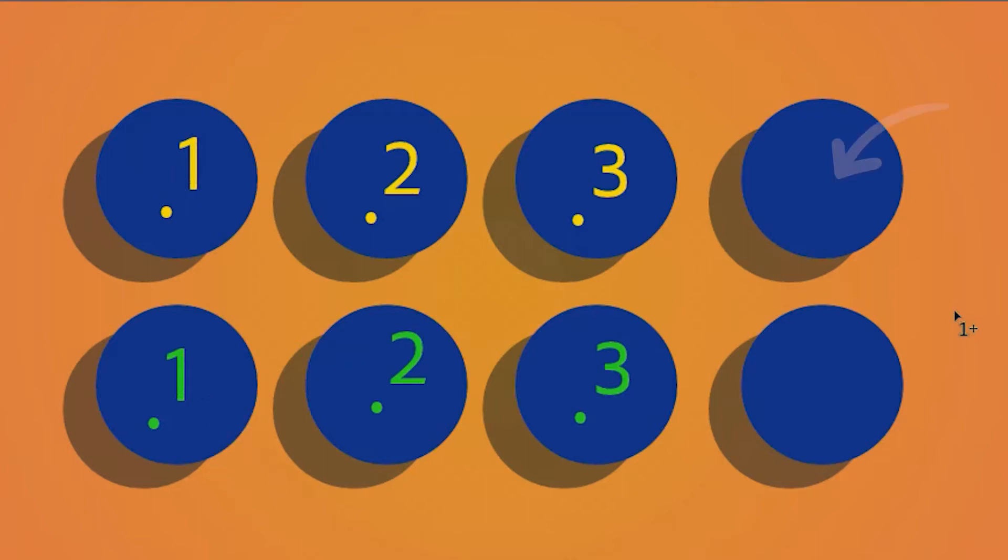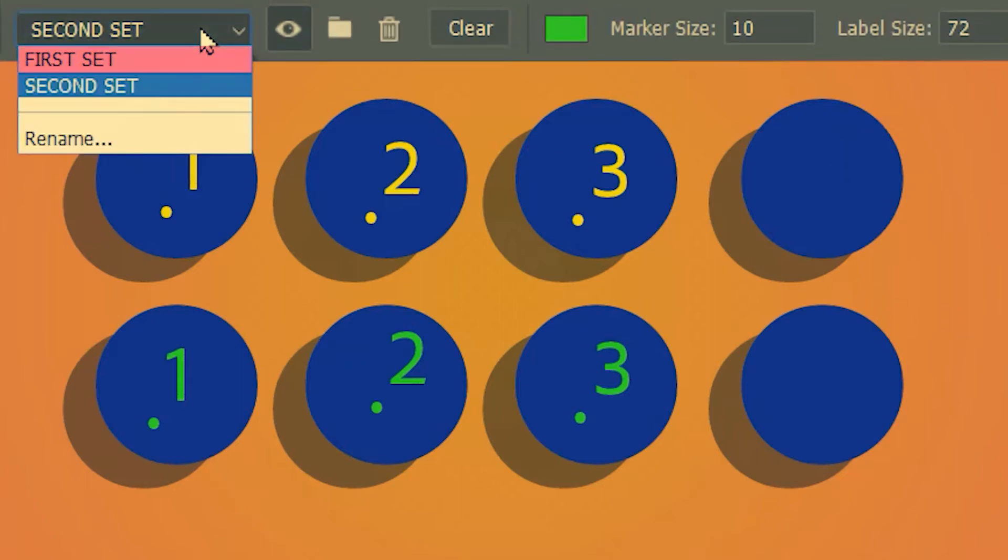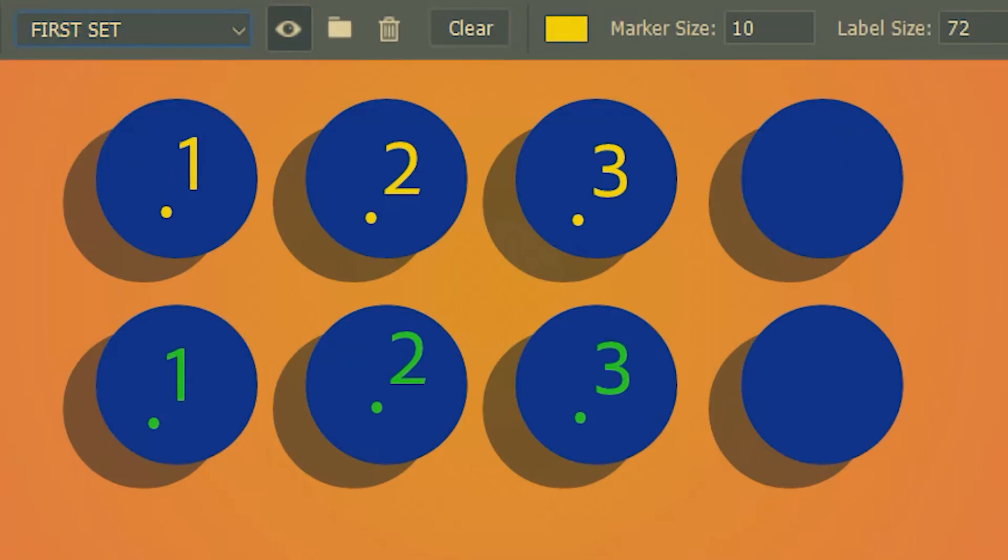But now you think that this ball from the top row should also be yellow. You can go ahead and select the first set over here. Then when you click on the circle it's going to continue the numbering of the first set which is 4.